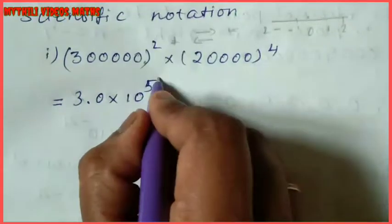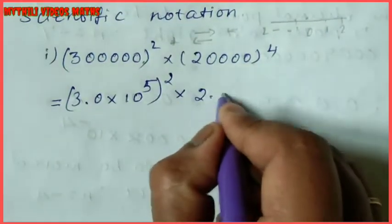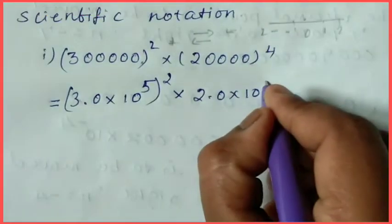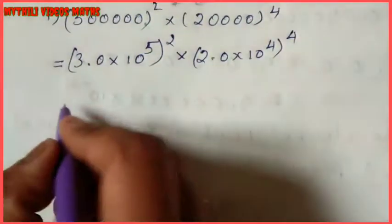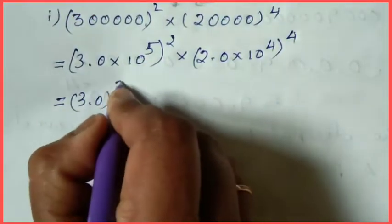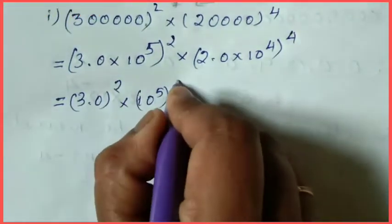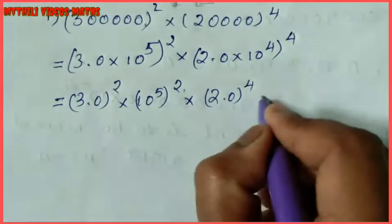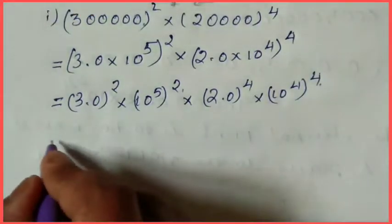Similarly, 2.0 into 10 to the power 4, because there are 4 zeros. So we write whole power 4. Next: 2.0 whole power 4 into whole power 4.